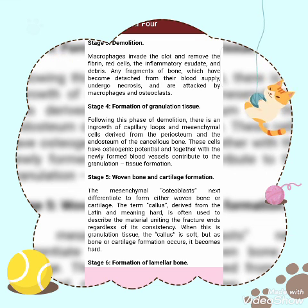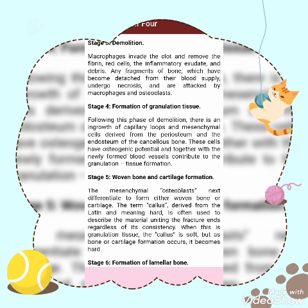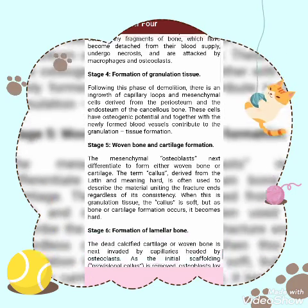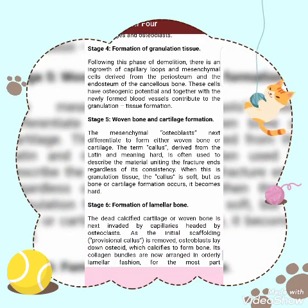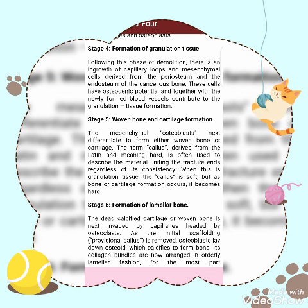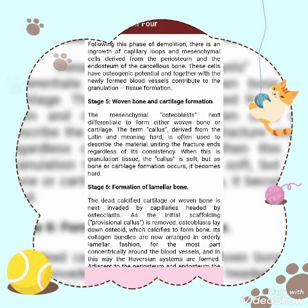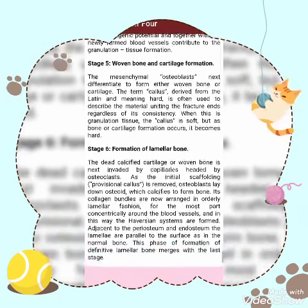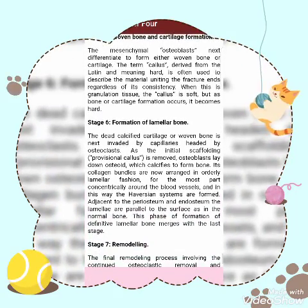Stage two is inflammation: the tissue damage excites an inflammatory response; the exudate adds more fibrin to the clot already present. The inflammatory changes differ in no way from those seen in other tissues: there is increased blood flow and polymorphonuclear leukocytic infiltration; the hematoma tends to a fusiform shape. Stage three is demolition: macrophages invade the clot and remove the fibrin, red cells, inflammatory exudate, and debris. Any fragment of bone which has become detached from its blood supply undergoes necrosis and is attacked by macrophages and osteoclasts.